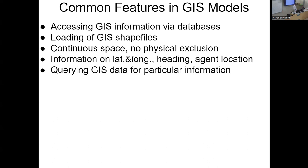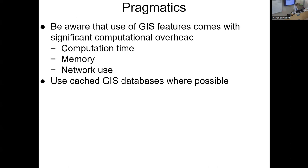We have information on the latitude and longitude, the heading — the direction an agent is going — and their location at any one time in latitude and longitude. We query GIS data for particular information. A few pragmatics before we get into exploring this example by building it up, and as time allows, some of these other examples.